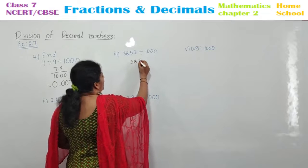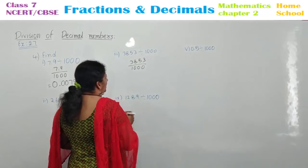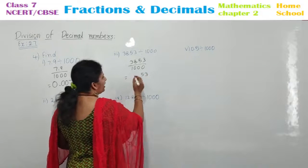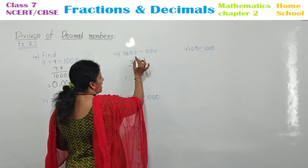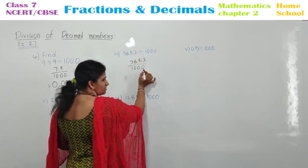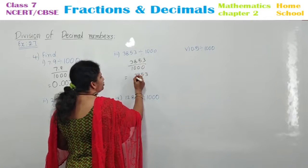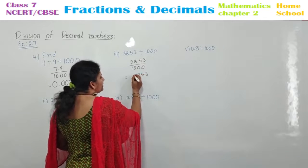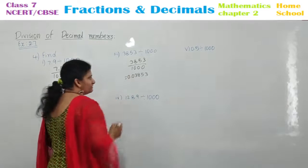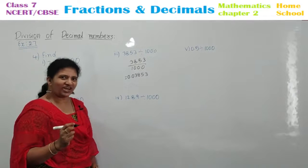38.53 by 1000. Write 3, 5, 3. From here, after three values, you need to shift your point to this side — three zeros there, right? Start counting: 1, 2 — nothing there, write 0 — then 3. Put the point and 0. This is your answer: 0.03853.